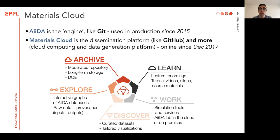I will show and describe each of them in a moment, but let me first make an analogy. You already know AIDA, and you can think of AIDA as the engine that powers your simulations and keeps track of your data and the history of your data. In this sense, it's similar to Git, where Git is used to keep track of the history of your source code. In this analogy, Materials Cloud plays the role of GitHub — it's a place where you can take what AIDA stored, push it online, make it easy to browse, and make it easy to share with collaborators.